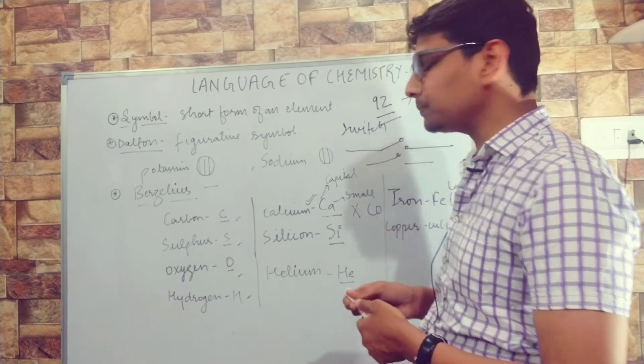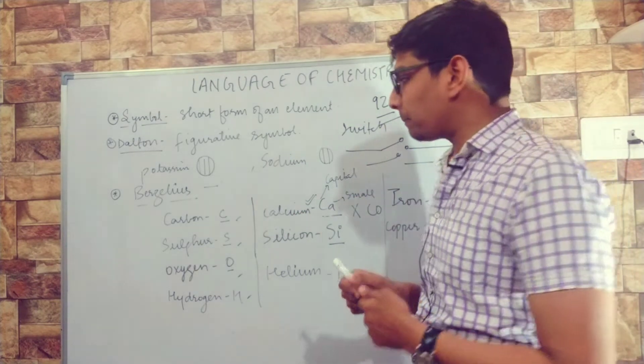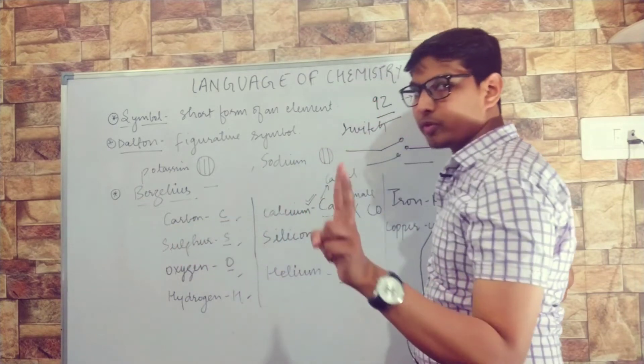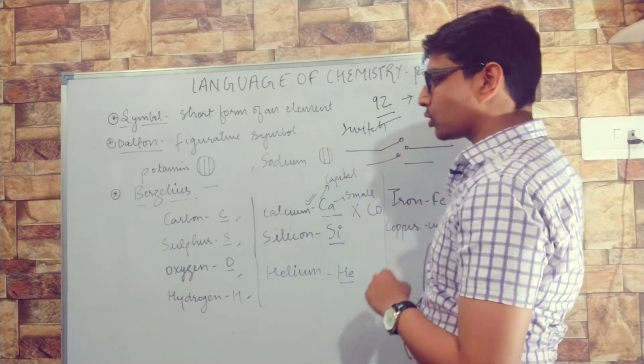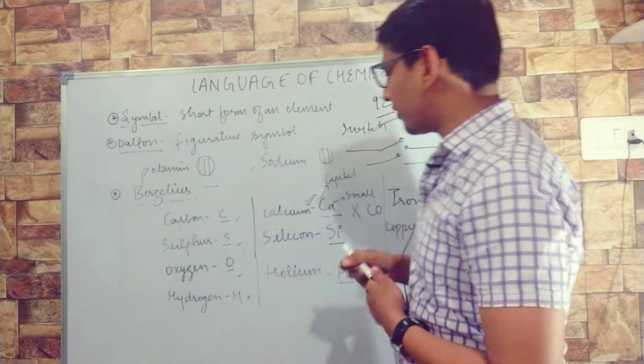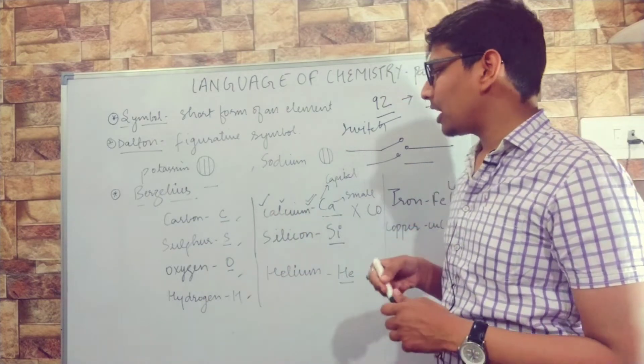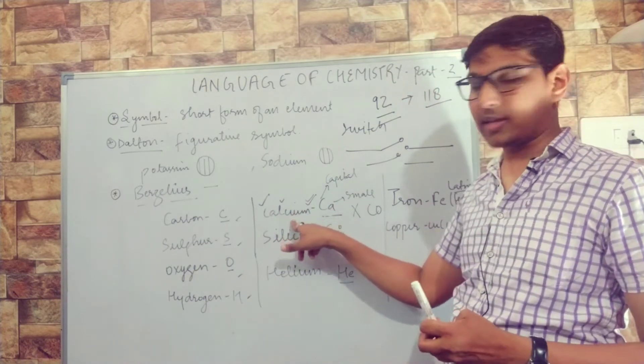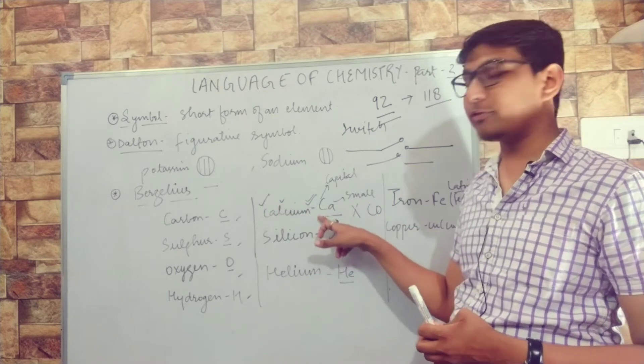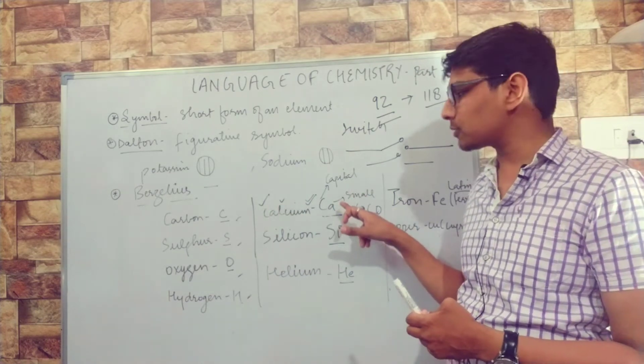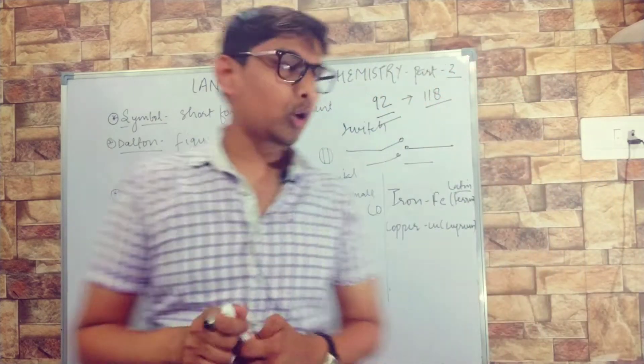Now carbon and calcium are done. Suppose another element name also starts with C - we will take the first and third letter. When writing these symbols, the first letter will be capital followed by a small letter.